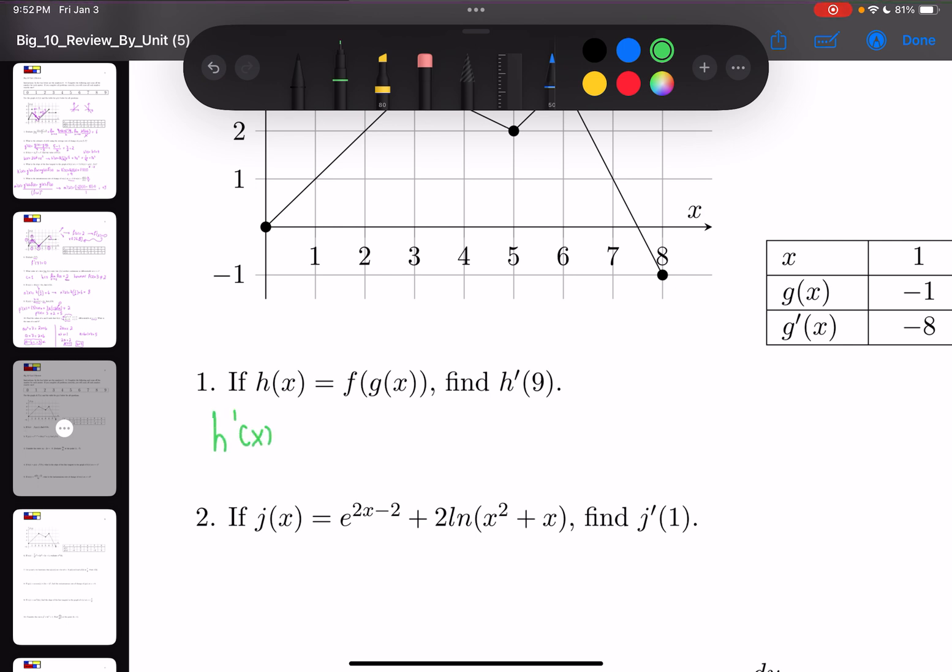So H'(x) = f'(g(x)) times g'(x) according to chain rule. So H'(9) is going to be f'(g(9)) times g'(9).